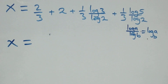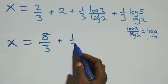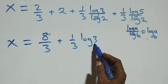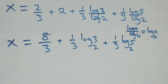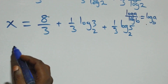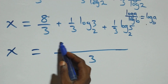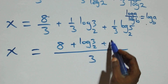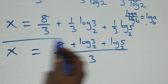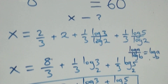Combining as one fraction, two over three plus two equals eight over three. So x equals eight over three plus one over three times log three base two plus one over three times log five base two, which gives x equals eight plus log three base two plus log five base two, all over three. Let's verify this satisfies the original equation.